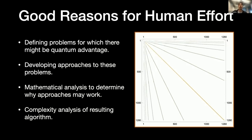You also need to do complexity analysis — expressing how expensive the algorithm is as an analytic function of input parameters, saying what the asymptotic complexity is and how it scales as problem size increases. All of these are good reasons for human effort. But there's a bunch of things we're doing that isn't really reasonable for humans to be doing at this level.